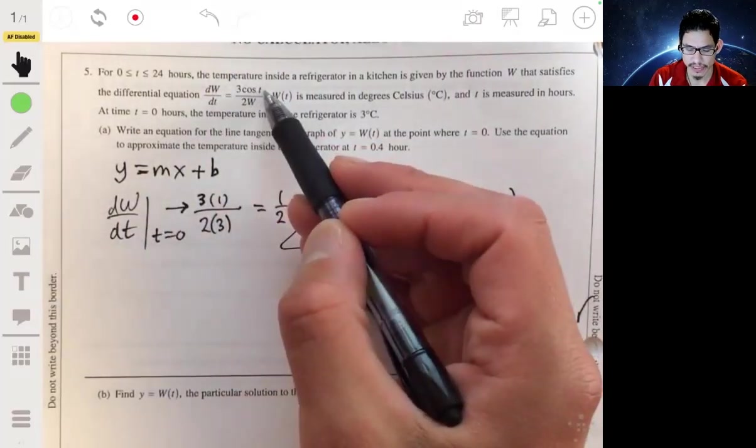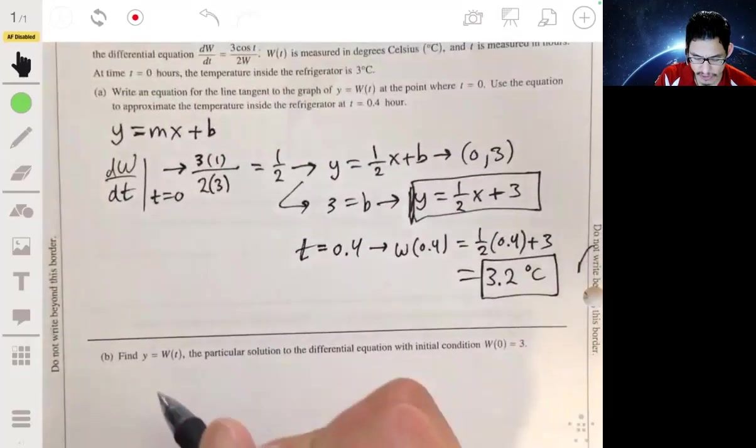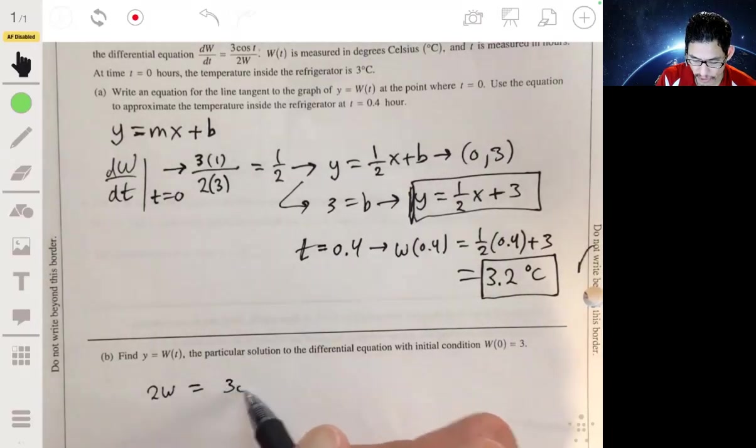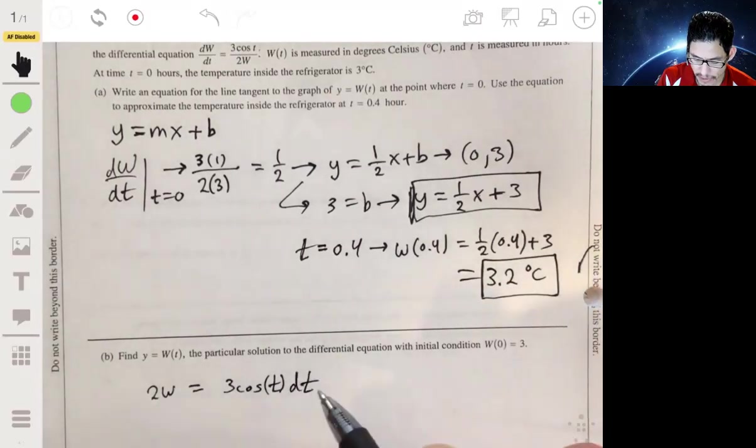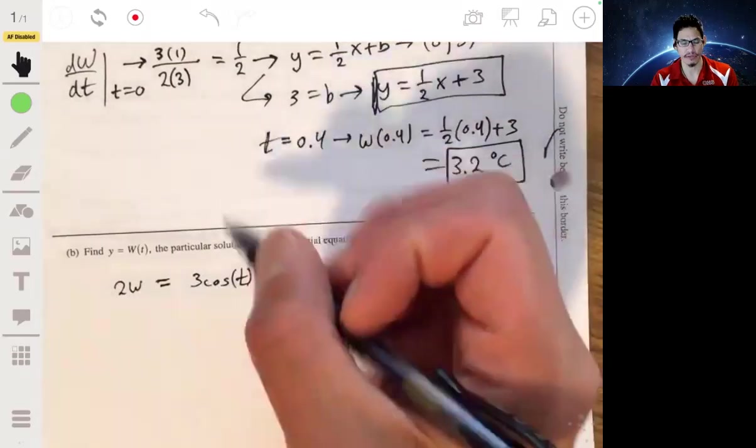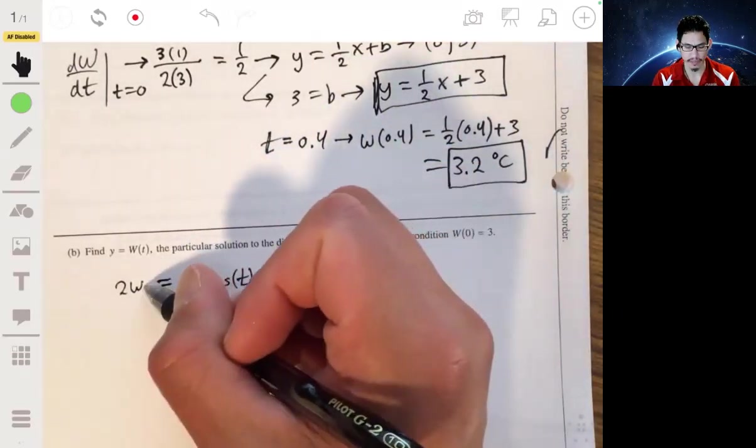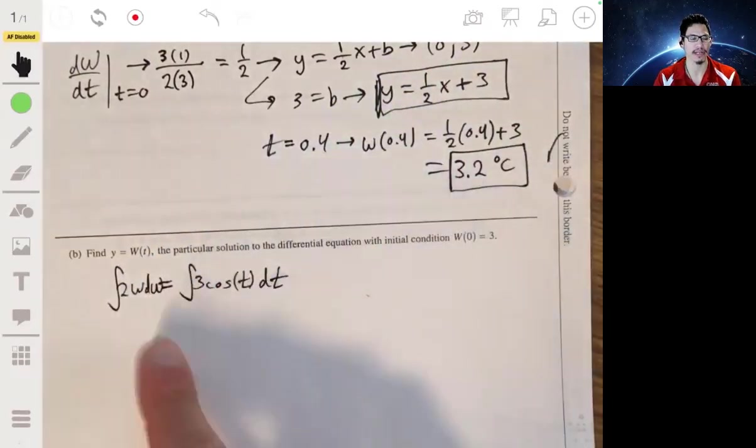So, let's bring the T's to the right and the W's to the left. So, what we'll have is 2W dW is equal to 3 cosine of T dt. And since we now have our variables on opposite sides of the equation. Oh, I forgot the DW. We can now throw an integral operator and integrate each side.